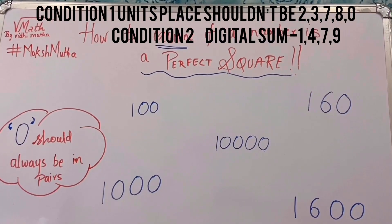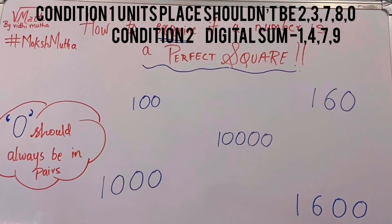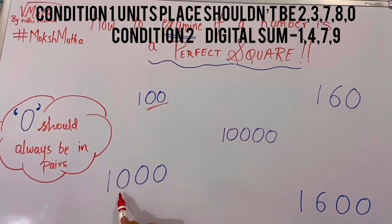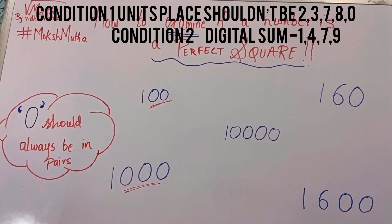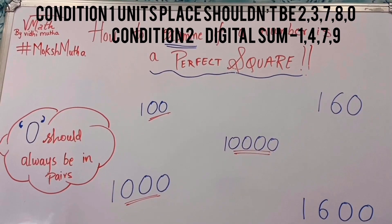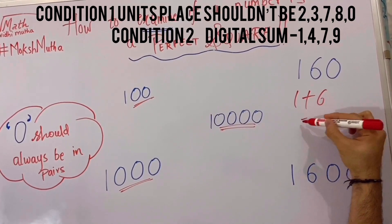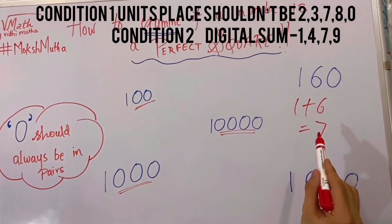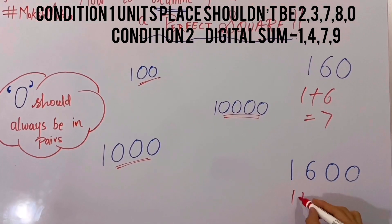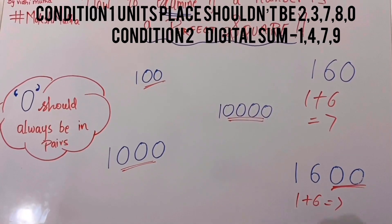You have to remember that zeros should always be in pairs — meaning 2, 4, 6, or 8 zeros. You can see there are 2 zeros, so it is a perfect square number. If there are 3 zeros, it is not a perfect square number. With 4 zeros, it is a perfect square number. The digital sum of 160 is 7, but note there is a single zero, so it is not a perfect square number. In the next example, the digital sum is again 7 and there are 2 zeros, so it is a perfect square number.